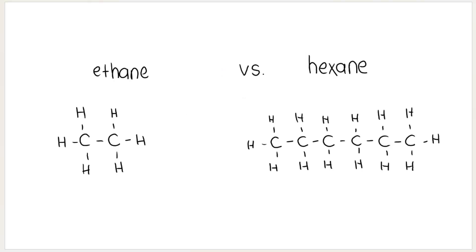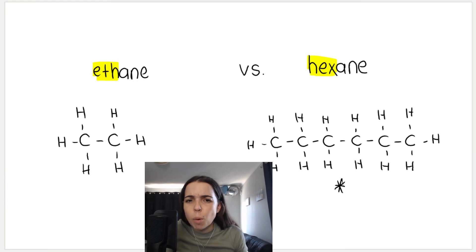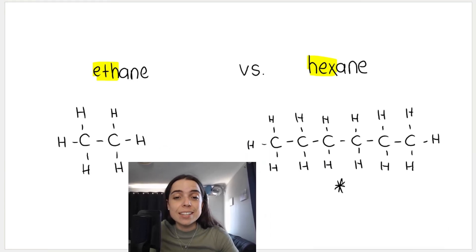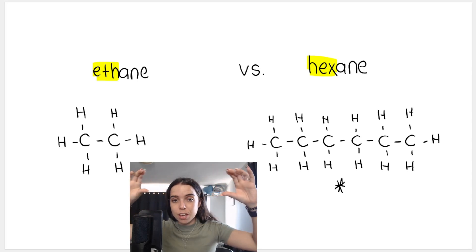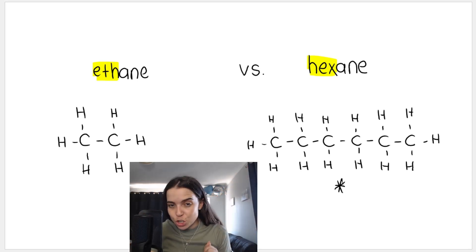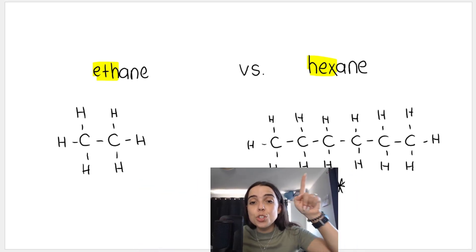Take a look at ethane versus hexane. Ethane obviously has two carbons in the main chain; hexane has six. Which of these would have a higher boiling point? Hopefully you're all saying hexane. The reason is because its chain length is longer. But what does a longer chain length mean for boiling points — how do they connect? The longer the chain length, the more carbons in the main chain, the greater the surface area of the molecule.